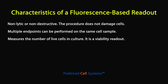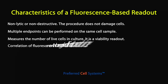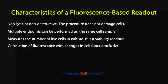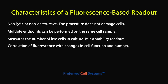It's a viability assay. However, when cells proliferate or are inhibited from proliferation by cytotoxic agents, the amount of fluorescence produced changes proportionally. Therefore, the fluorescence readout can be used as a proliferation or cytotoxicity marker.